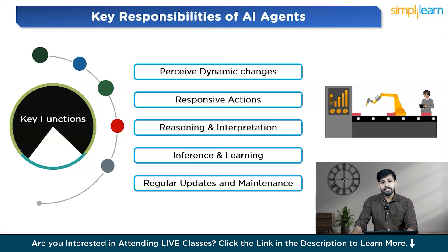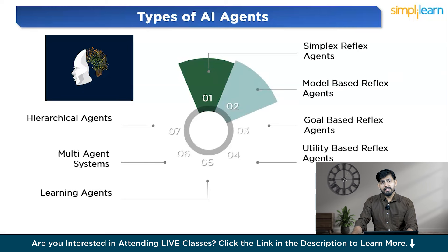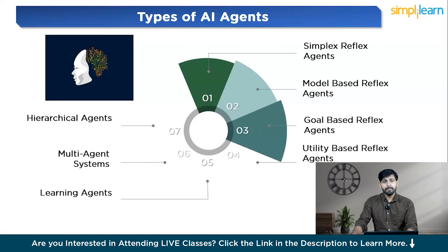There are several types of AI agents. First, simple reflex agents react to immediate perceptions without an internal model — for example, a thermostat adjusting temperature based on current readings. Second, model-based reflex agents use an internal model to handle partially observable environments — for example, a robot vacuum mapping a room to navigate efficiently. Third, goal-based agents make decisions based on achieving specific goals — for example, a navigation system finding the fastest route to a destination.